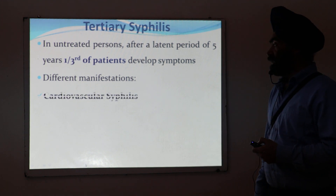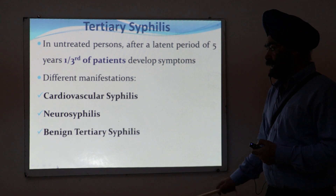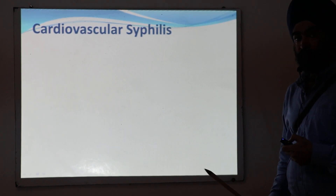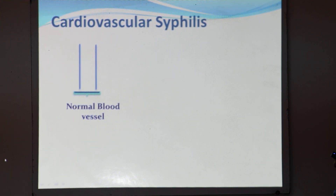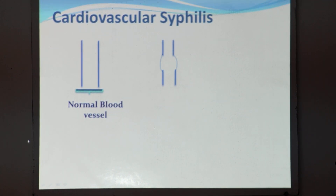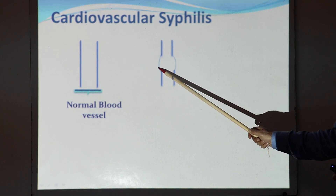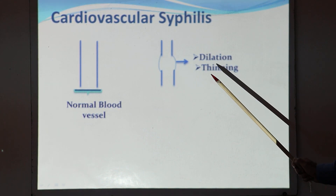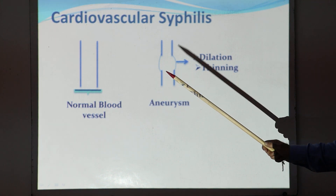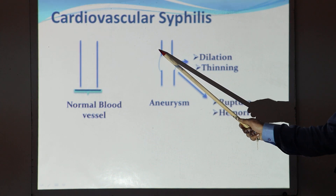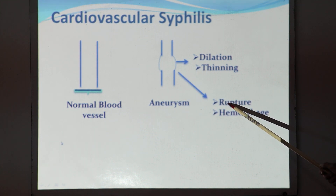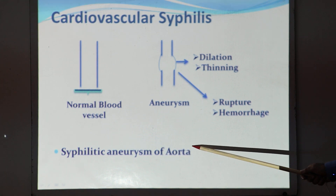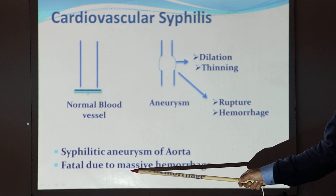There are different manifestations of tertiary syphilis: cardiovascular syphilis, neurosyphilis, and benign tertiary syphilis. In cardiovascular syphilis, the impact is on the blood vessels — they become dilated and thin in some portions, a phenomenon called aneurysm. This syphilitic aneurysm particularly affects the aorta, and it can be fatal due to massive hemorrhage from rupture.